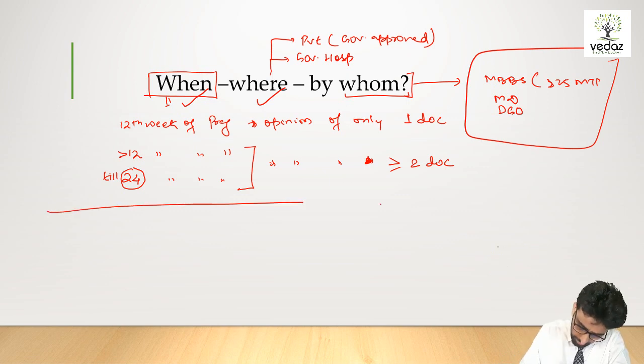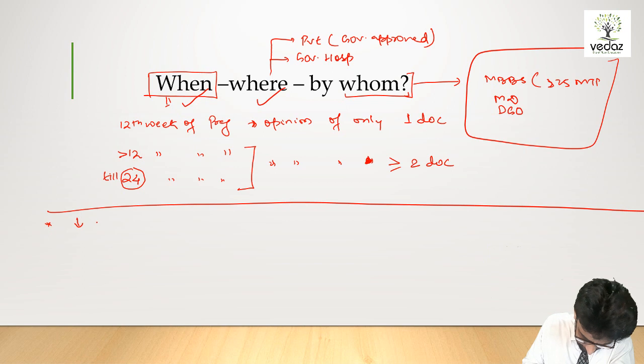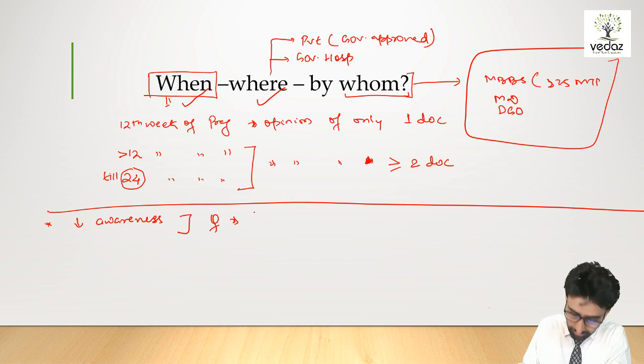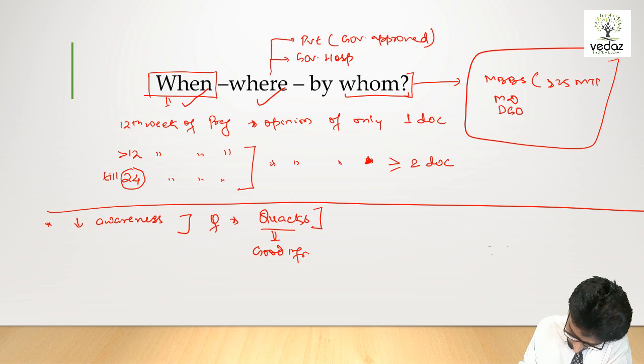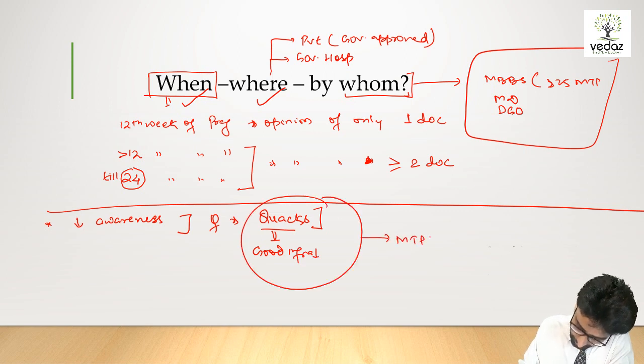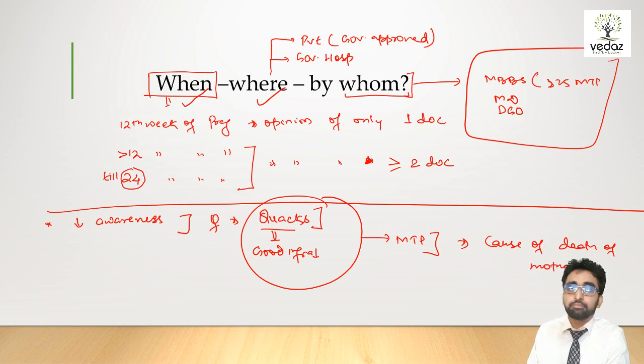Now the problem is what NCERT is saying: because of lack of awareness, the ladies or the females or the mothers, they are approaching the quacks for this MTP. Quacks are not fully qualified, they don't have good infrastructure also. So generally what happens is it leads to death of mother. The problem is that people go to the quacks because they don't have full knowledge about who should do it.